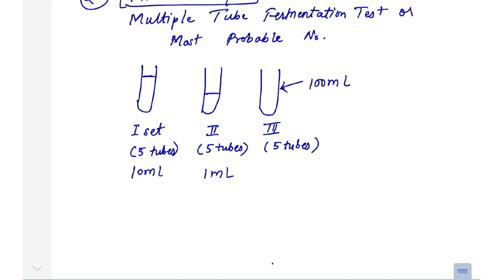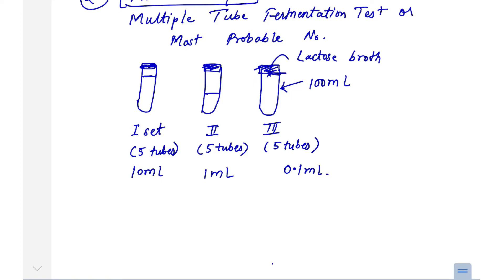In the first set, you have 10 ml of water sample; in the second set, 1 ml; and in the third set, 0.1 ml. You then add nutrients for the coliforms — specifically lactose broth. These 15 tubes are incubated at a standard temperature of 37 degrees centigrade for 48 hours.